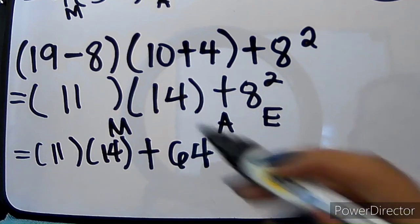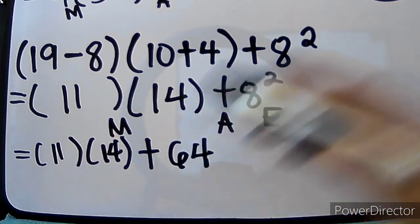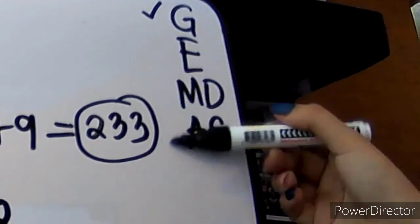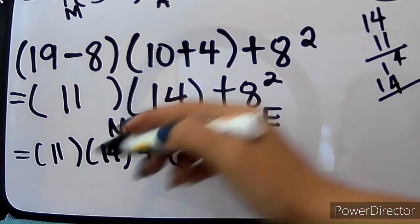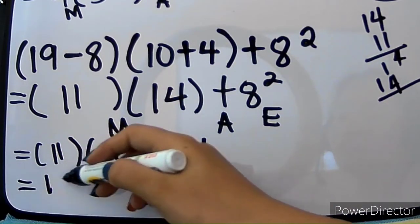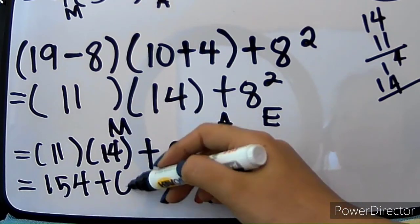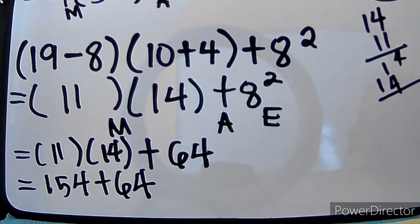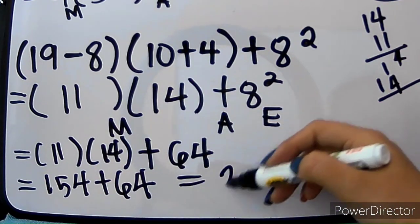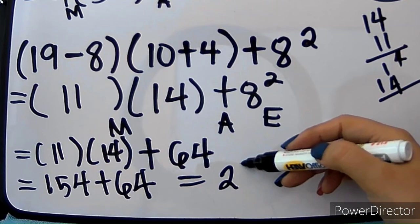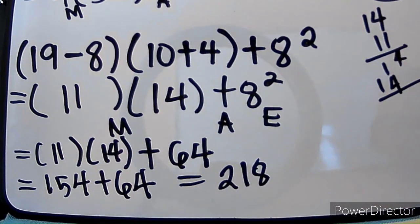So, we still have 11 times 14 plus E muna, which is 8 squared, which gives us 64. And then, we now have M and A lang — nandito yung M, nandito yung A. So, M muna yung gagawin natin. We have 14, so 154 plus 64. And since we only have one operation, 154 plus 64, that is 218. So that is our answer.